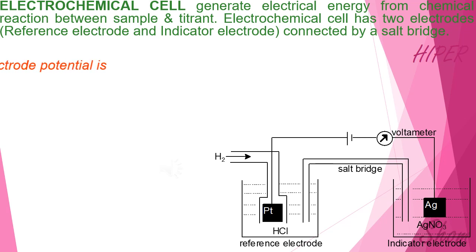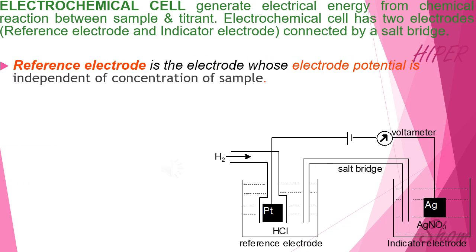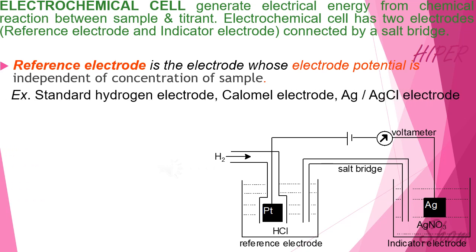What is the reference electrode? The reference electrode is the electrode whose electrode potential is independent of the concentration of the sample. Examples of reference electrodes include the standard hydrogen electrode, the calomel electrode, and the silver chloride electrode.